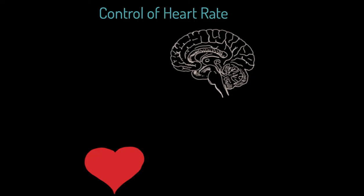I would like to introduce you to, right in the base of the brain over here, what we describe as an area of your brain which is the medulla oblongata. You'll find with the brain the names are really quite special. So medulla oblongata — this is where we find your cardiac control centre.